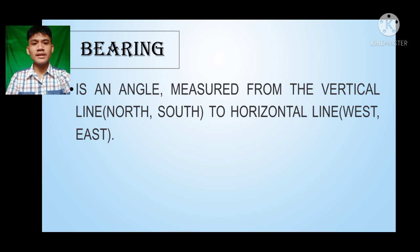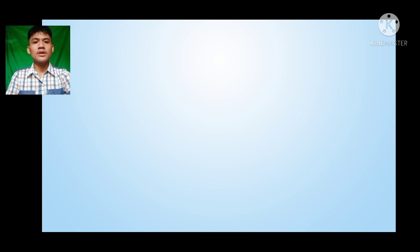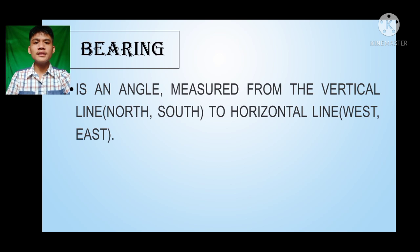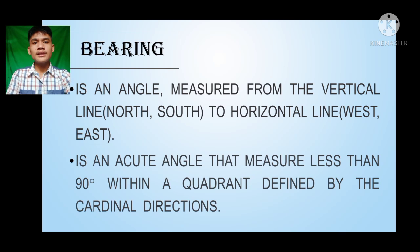Bearing is defined as the angle measured from the vertical line — north for the upper part and south for the lower part — to the horizontal line, which is west and east. The measurement of the bearing is an acute angle that measures less than 90 degrees, within a quadrant defined by the cardinal directions.